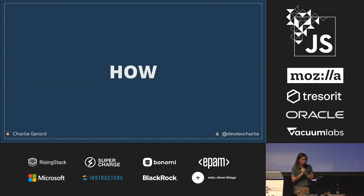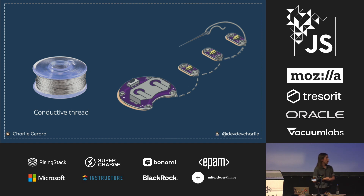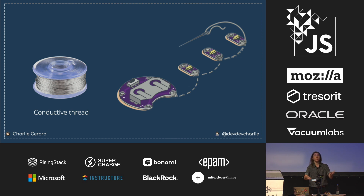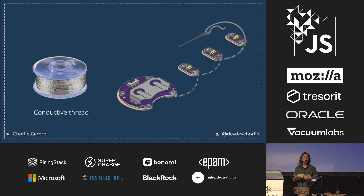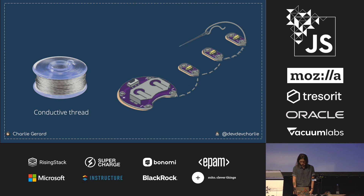At the core of how it works is conductive thread — normal thread mixed with stainless steel that carries current through a circuit the same way wires do. Usually with Arduino you connect your microcontroller and sensors with wires, and you can do exactly the same with conductive thread. The main difference is that wires are coated in plastic so you don't interact with them, whereas conductive thread is bare. Since your body conducts electricity, when you touch the thread you cause a change in electric charge that you can track and use as an input.